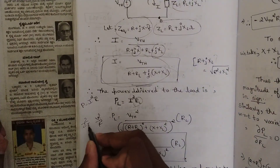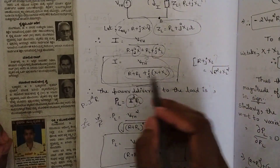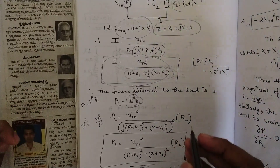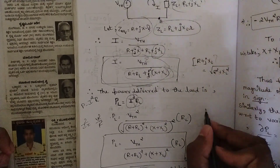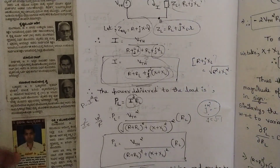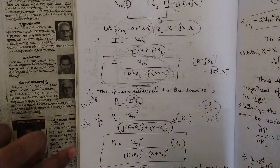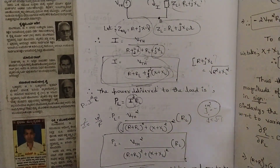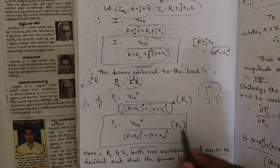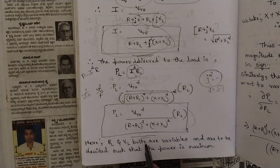So P_L equals V_th squared times R_L divided by the denominator squared. Substituting I squared as V_th squared over the magnitude squared: P_L equals V_th squared times R_L divided by (R plus R_L) whole squared plus (X plus X_L) whole squared. This is because j squared equals minus one, so the square root and square cancel. Here R_L and X_L are both variables to be chosen such that power is maximum.